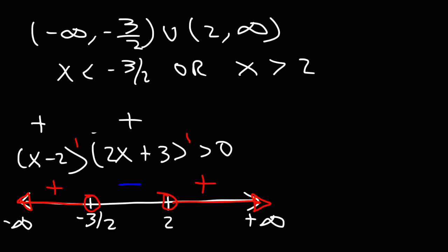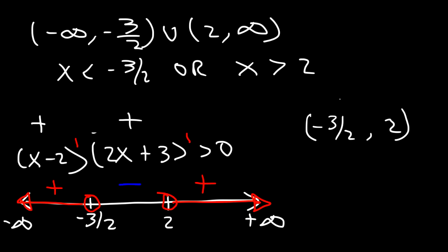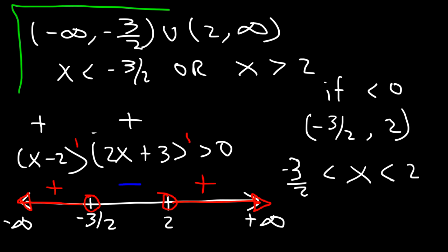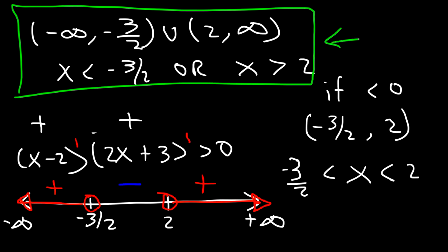If the inequality had been less than 0 instead, we would shade only the middle region, giving the interval notation negative 3 over 2 to 2, or as an inequality: x is greater than negative 3 over 2 but less than 2. But for this particular problem, the answer is the outer regions. Now you know how to solve quadratic inequalities. Thanks for watching.